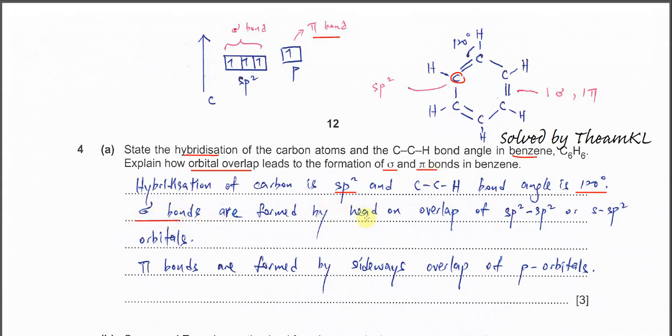Sigma bonds are formed by head-on overlap of sp2 orbitals - carbon and carbon hybrid orbitals undergo head-on overlap to form sigma bonds. Or it can be hydrogen with carbon: the s orbital of hydrogen with the hybrid orbitals in carbon. The pi bond is formed by sideways overlap of p orbitals. This carbon and this carbon both have unpaired electrons in p orbitals, and these orbitals undergo sideways overlaps to form one pi bond.